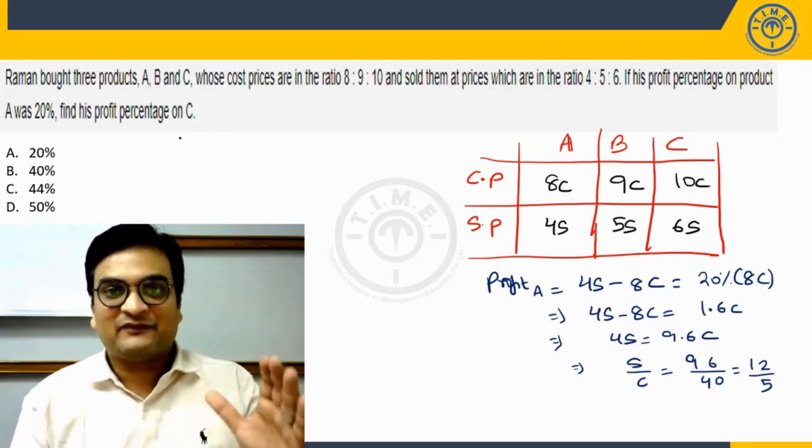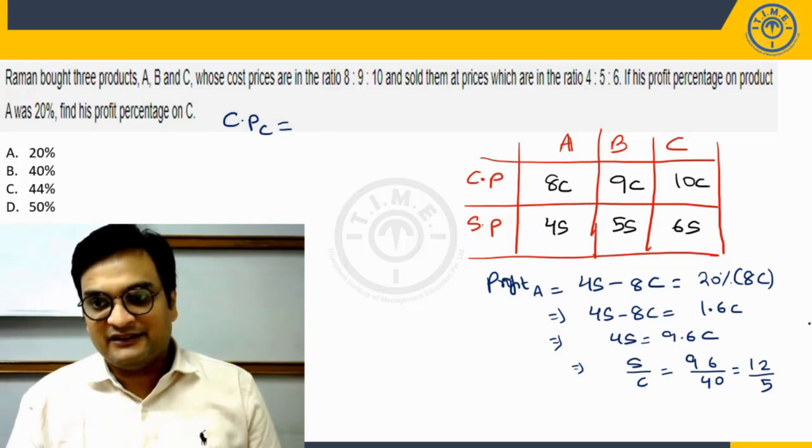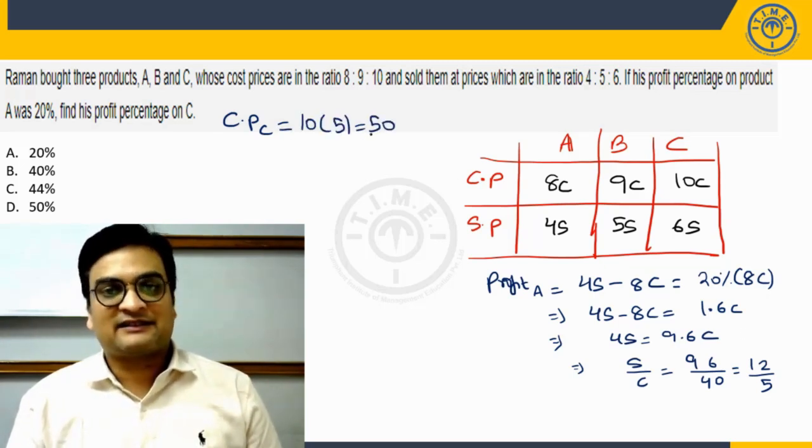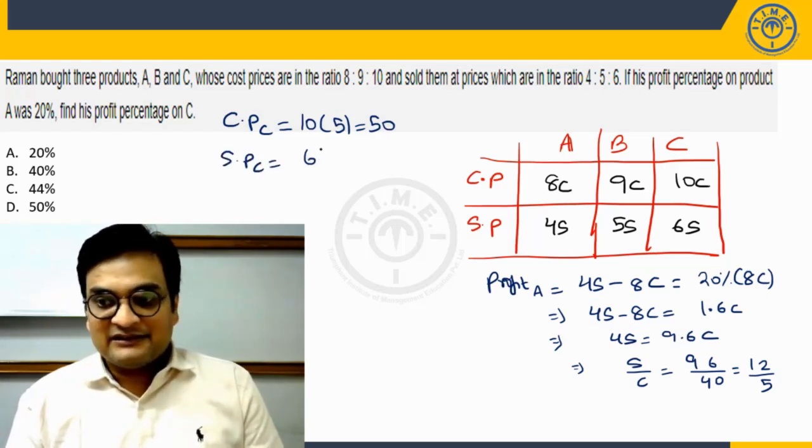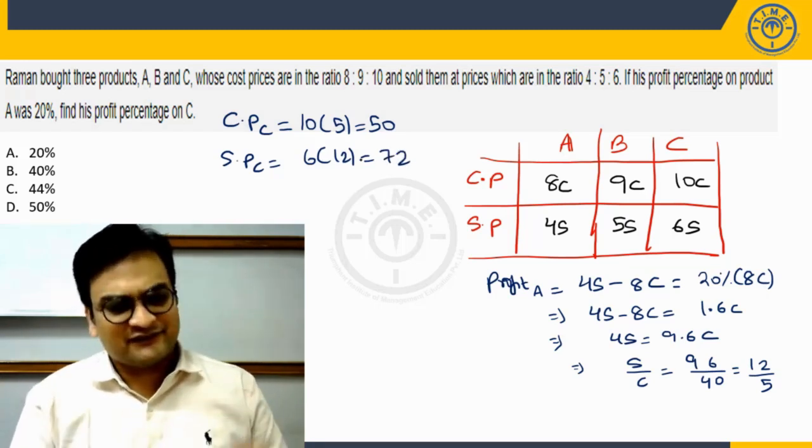When I take S as 12 and C as 5, let us see what happens on C, on the C side. Can I say cost price of C after this is 10 into C which is 10 into 5 is 50 units. Selling price of C is going to be 6S, 6 into 12 which is going to be 72 units, rupees or whatever.